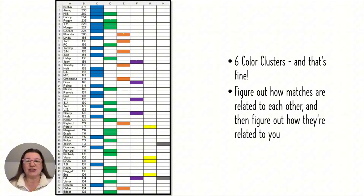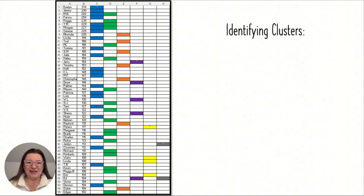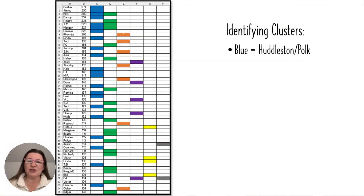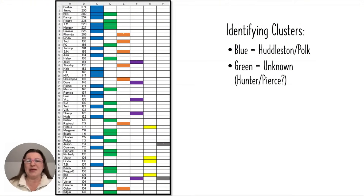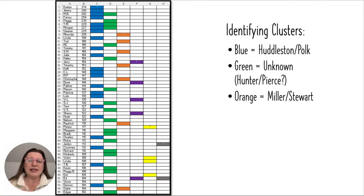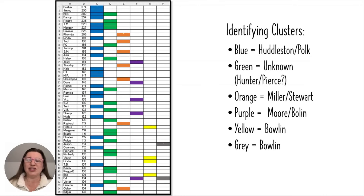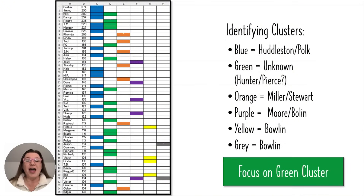The next step is to figure out how the matches in each cluster are related to each other and to you. The blue cluster is the Huddleston-Polk — William Emmett Hunter's wife was Winnie Huddleston, and her parents were a Huddleston and Polk. The green cluster were people I didn't know, so this is likely the Hunter-Pierce mystery part of her tree. The orange were her Miller-Stewarts on the mother's side, purple is Moore-Bolin, yellow is just Bolin, and gray is just Bolin — all on her maternal side, so we're not really interested in those for this case. I'm going to focus on that green mystery cluster to find the parents of William Emmett Hunter.